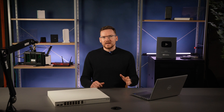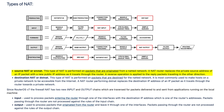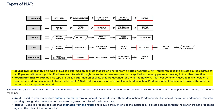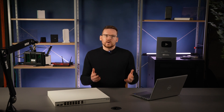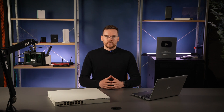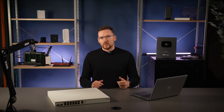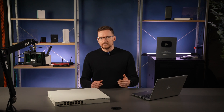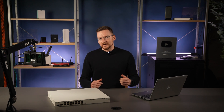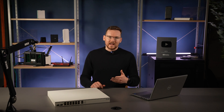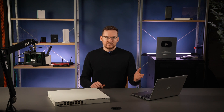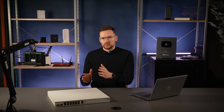RouterOS distinguishes between two major types of NAT: Source NAT and Destination NAT. The idea is to separate outgoing connections from incoming connections, because most of the time you do not want strangers on the internet to be able to connect to your LAN devices. Therefore, depending on what you want to accomplish with Static NAT, you might have to add one or two NAT rules for the most complete one-to-one conversion.